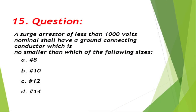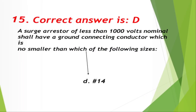Question number 15: A surge arrestor of less than 1000 volts nominal shall have a ground connecting conductor which is no smaller than which of the following sizes? A. Number 8, B. Number 10, C. Number 12, D. Number 14. Correct answer is D, Number 14.